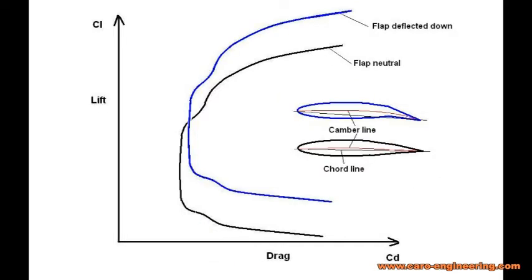If the airfoil is designed to have a flap, the flap is used to shift the range of low drag up and down — this is called a change in camber. Changing from high camber in slow flight to low camber in cruise improves efficiency and allows having overall lower drag from using a thinner airfoil. The camber line, shown here in red, is drawn in the middle between the upper and lower surfaces. The further its distance from the chord line, the higher the camber. Note that the minimum drag CDO increases a little when the flap is deflected down.